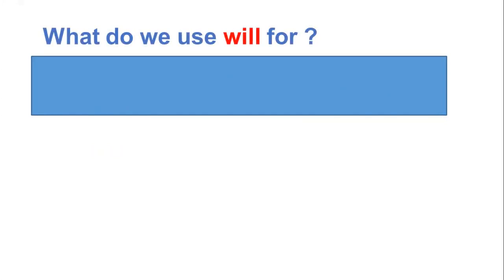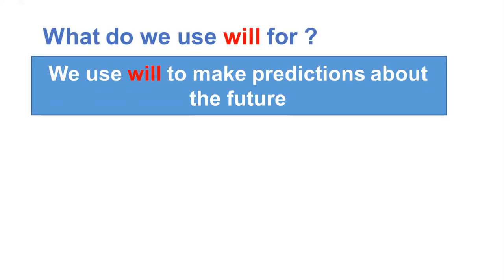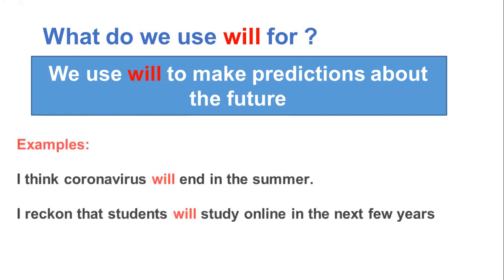What do we use will for? We usually use will to make predictions about the future. For example, I think coronavirus will end in the summer. I reckon that students will study online in the next few years. I reckon has the same meaning as I think.